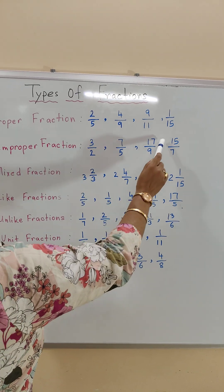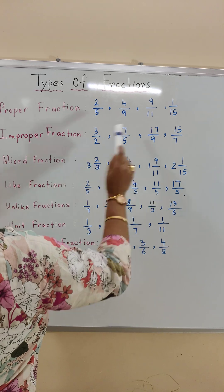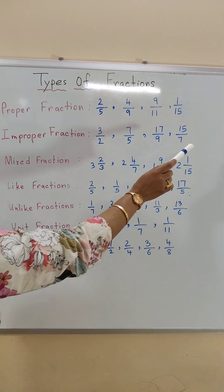7 by 5, 17 by 9, 15 by 7. These are all examples of improper fractions.